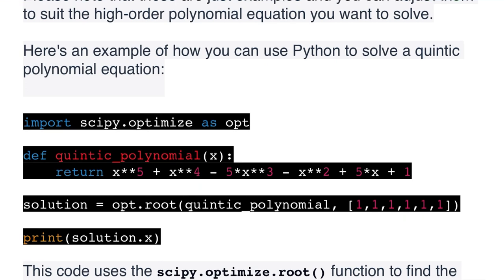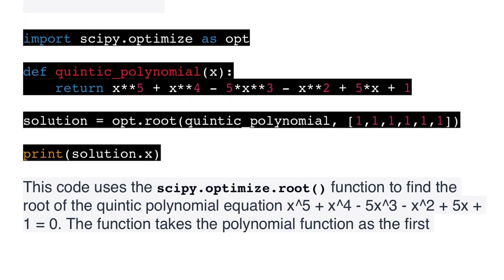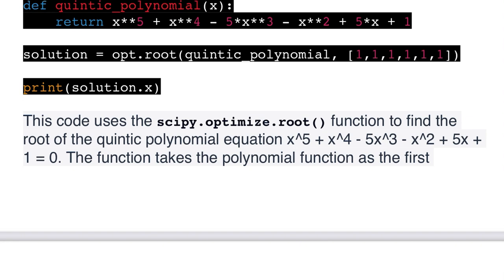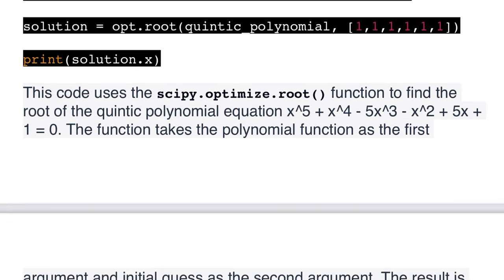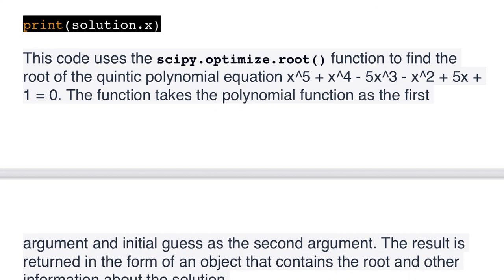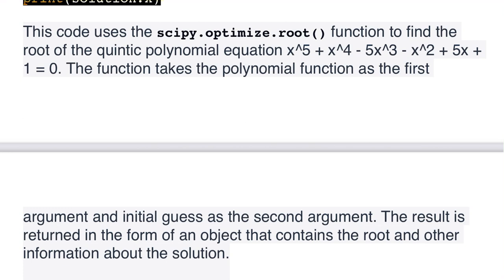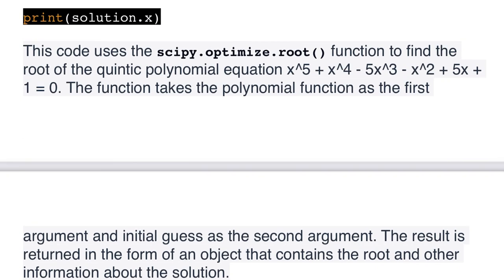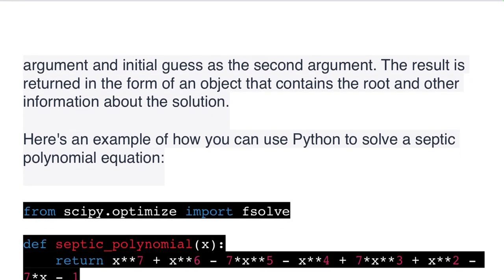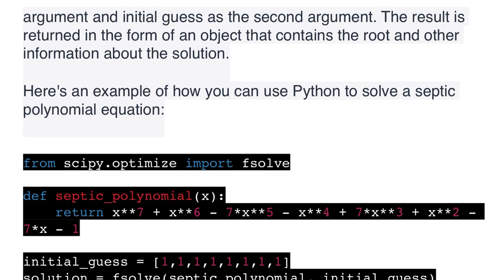Here's an example of how you can use Python to solve a quintic polynomial equation using scipy.optimize.root(): solution = root(quintic_polynomial, [1,1,1,1,1]); print(solution.x). The quintic_polynomial function returns x^5 - x^4 + 5x^3 - x^2 + 5x - 1. The function takes the polynomial function as the first argument and an initial guess as the second. The result is an object containing the root and other solution information.